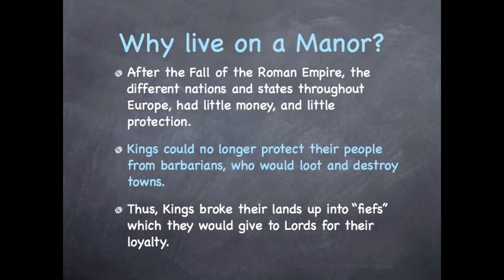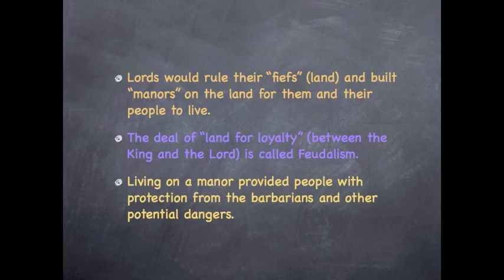Why live on a manor? After the fall of the Roman Empire, the different nations and states throughout Europe had little money and little protection. Kings could no longer protect their people from barbarians who would loot and destroy towns. Thus, kings broke their lands up into fiefs which they would give to lords for their loyalty. Lords would rule their fiefs and build manors on the land for them and their people to live. The deal of land for loyalty between the king and the lord is called feudalism, and living on a manor provided people with protection from barbarians and other potential dangers.